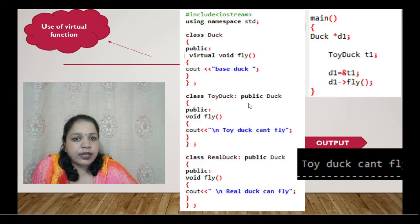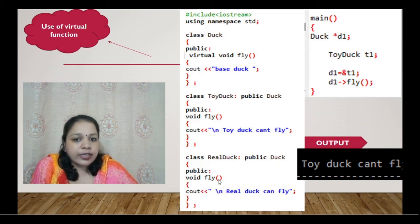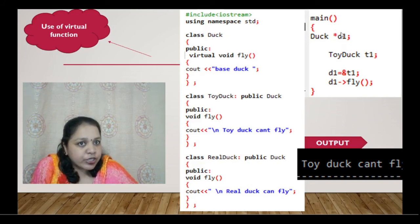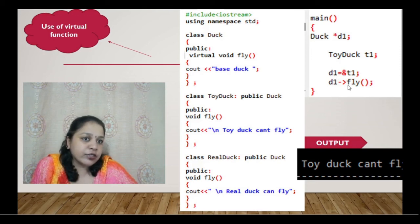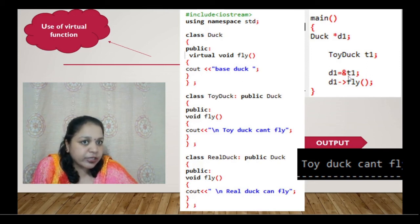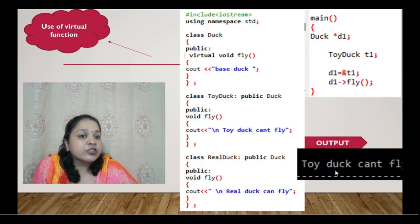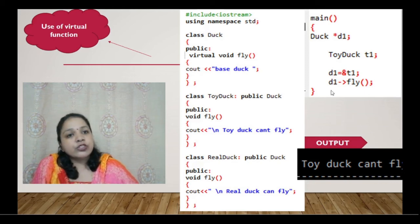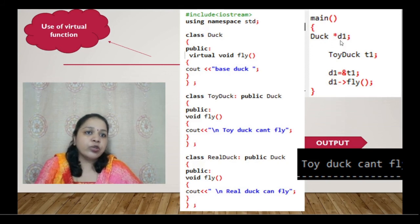Everything else remains the same — Toy Duck is derived from Duck with a fly function printing 'toy duck cannot fly', and Real Duck has a fly function printing 'real duck can fly'. In the main function, Duck has a pointer object and Toy Duck has object t1. The address of t1 is assigned to d1. Now when we call d1.fly, instead of accessing the base class, it goes to the derived class and prints 'toy duck cannot fly'.